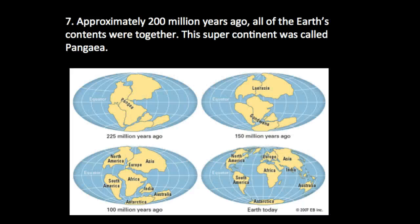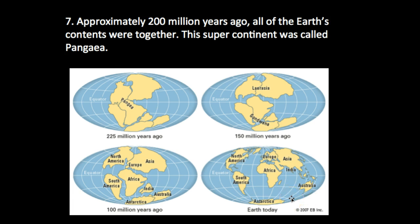Approximately 200 million years ago, all of the Earth's continents were together, and there was a supercontinent called Pangaea. About 225 million years ago they were all together, and they separated about 150 million years ago into two major supercontinents, then started to separate into what we know today. This took over 225 million years, and right now our Earth is still moving. Extra credit to anybody who finds a projection of what scientists think it might look like 200 million years from now.